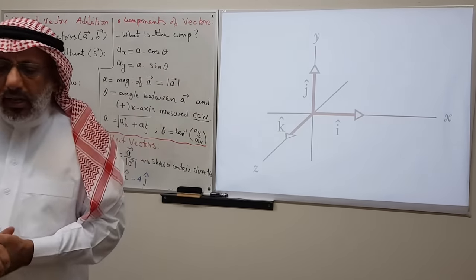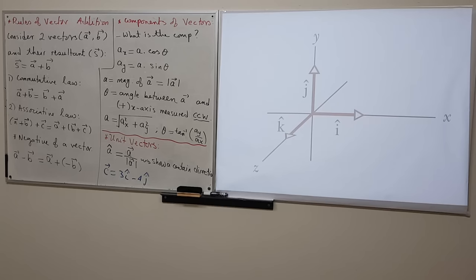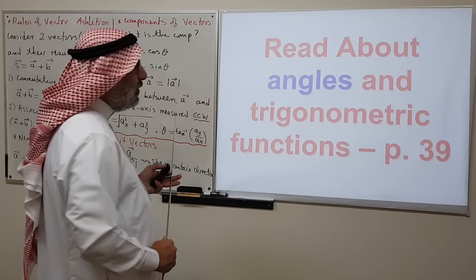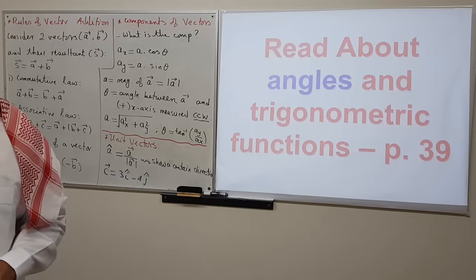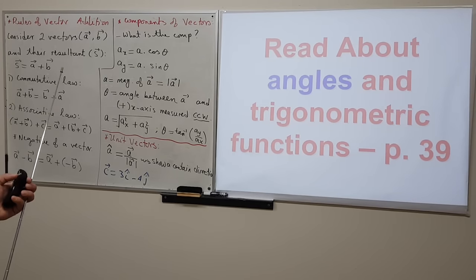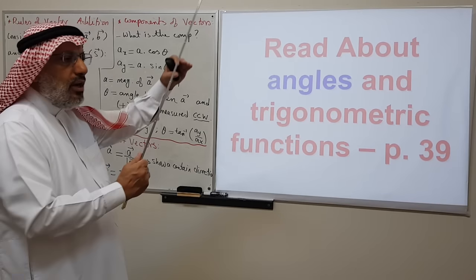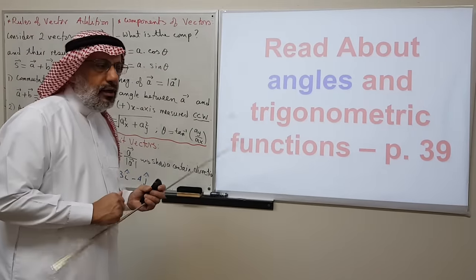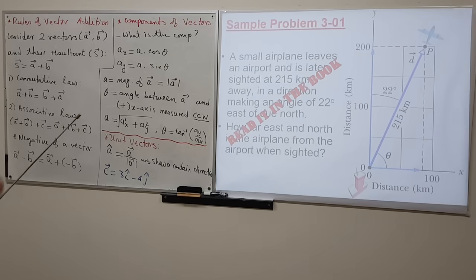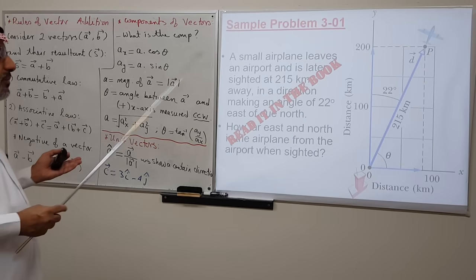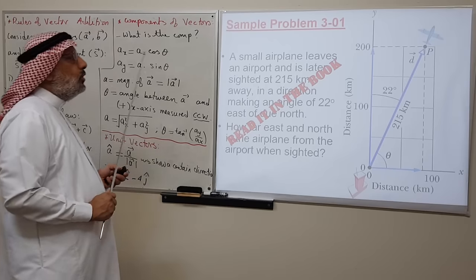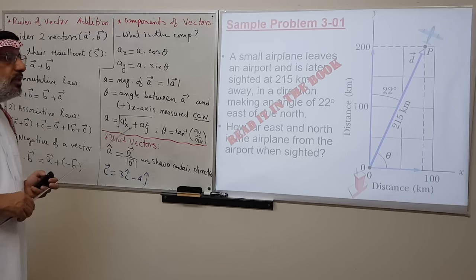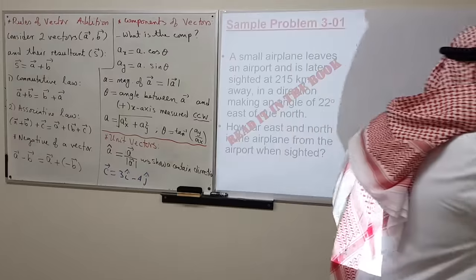There is a very good summary in the textbook on page 39 about angles, radians, degrees, and trigonometric functions — sine, cosine, and tangent. If you want to refresh your memory, there's a concise review on that page. Also, sample problem 3-01 in the textbook is about vector addition, which I leave for you to read.